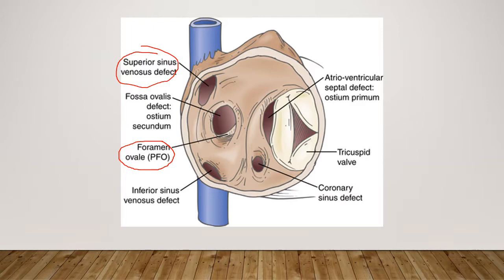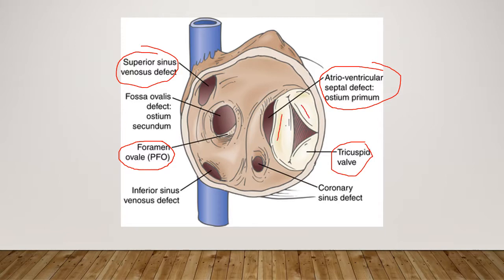A PFO is a holdover from in utero, when its job is to shunt blood from the right side of the heart to the left. Then it reverses as the baby is born and hopefully closes within 24 to 48 hours, though it can persist — the oldest patient I saw with one was 72. Here you can also see the ostium primum, the tricuspid valve with all three leaflets, and the location of the coronary sinus defect.